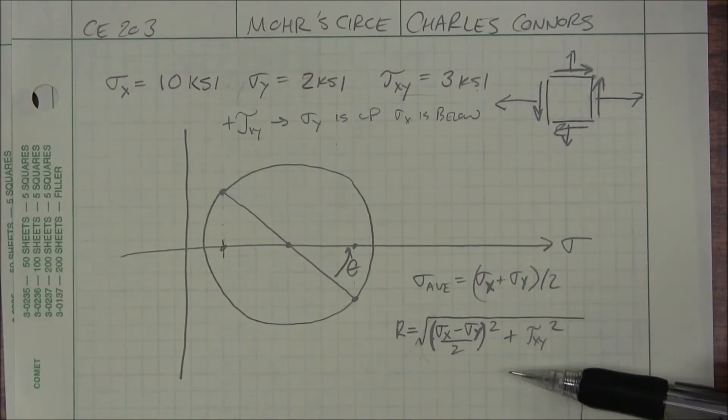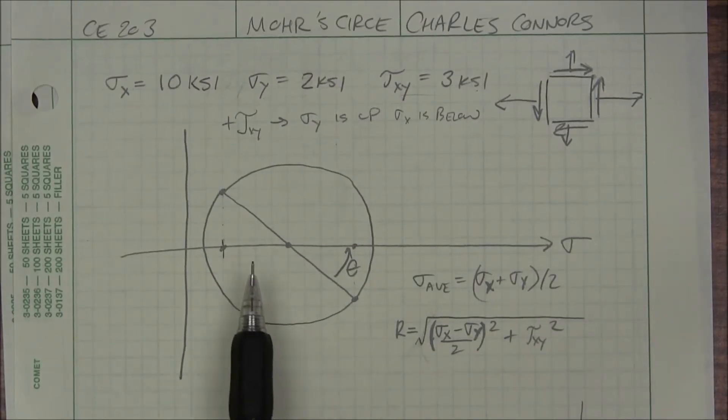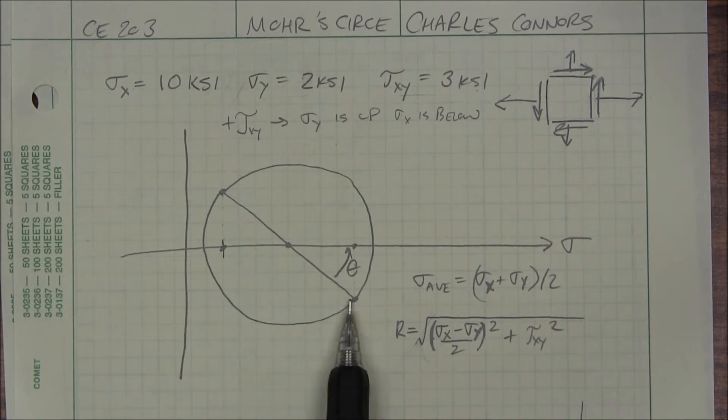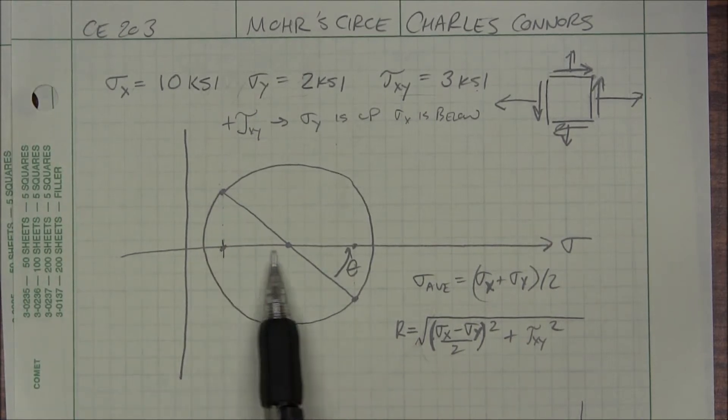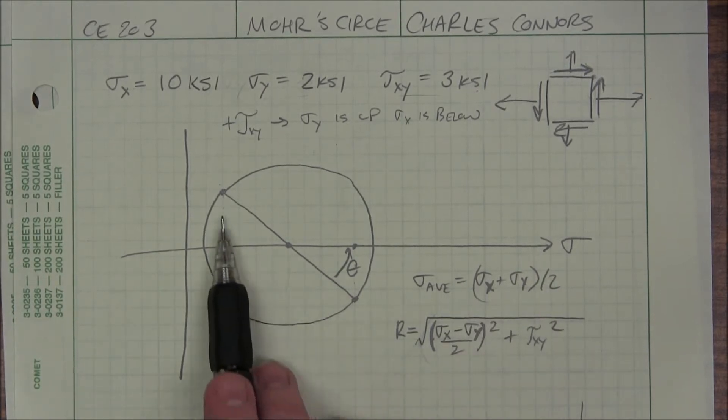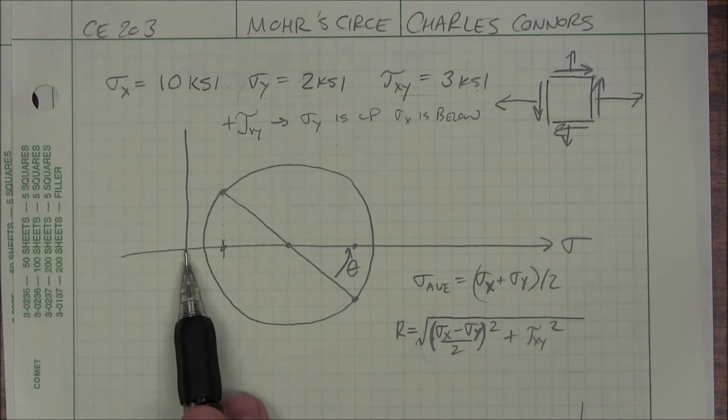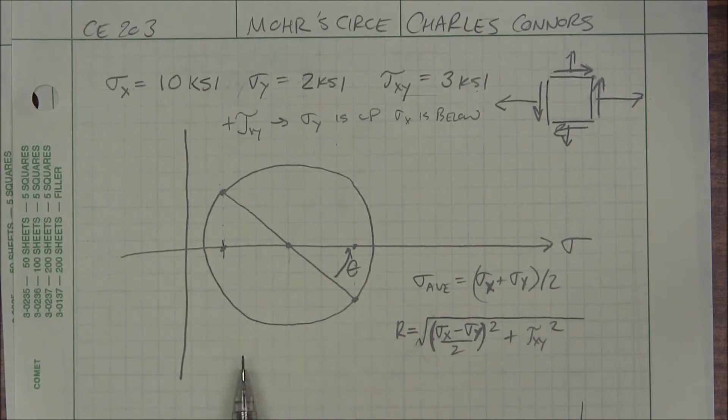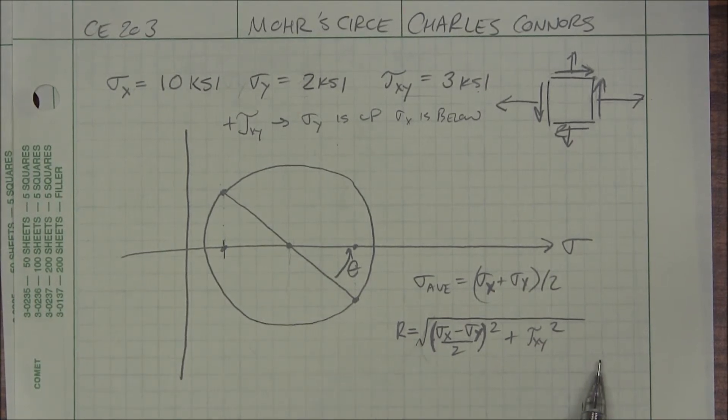If you compare this with the formulas, you can tell that the average, the midpoint between my sigma X and sigma Y, my sigma average, and the formula is just an average as well. I just add the two together and divide by 2, and I get that same value.